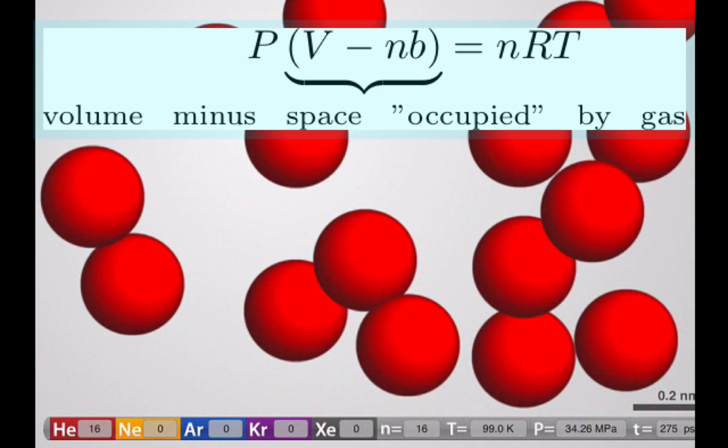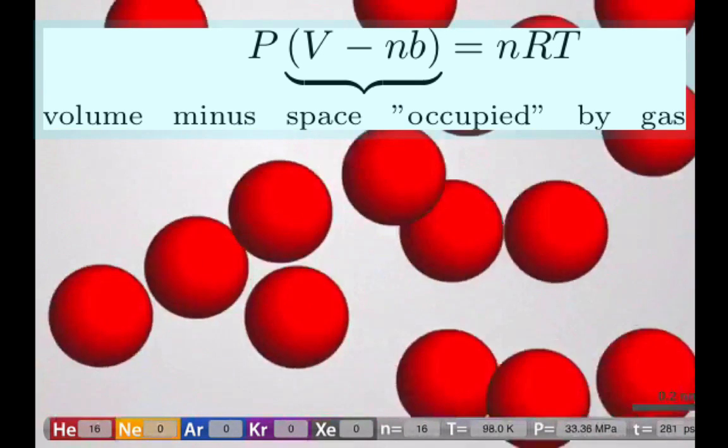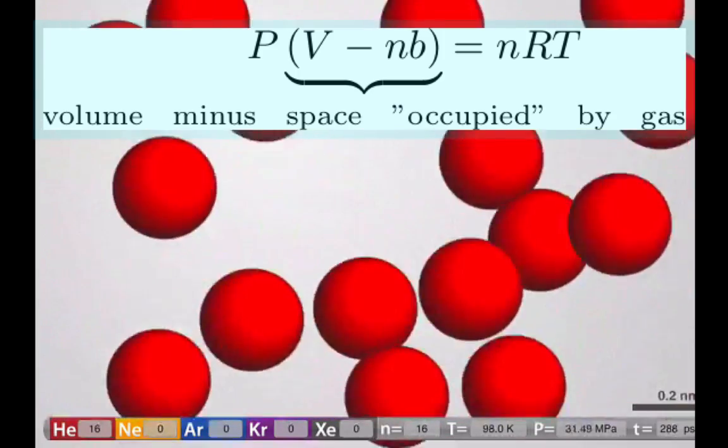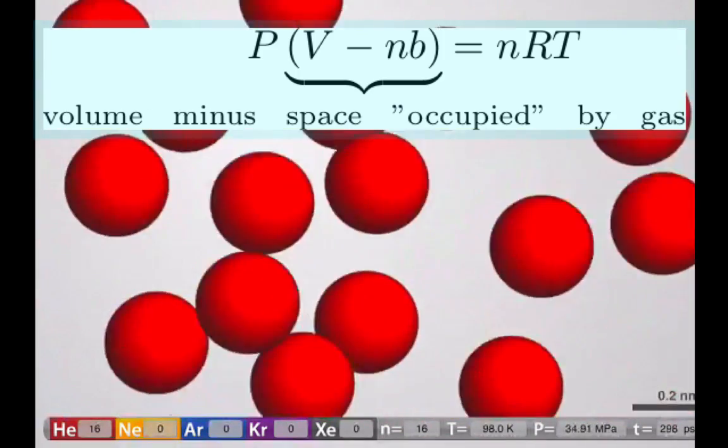That depends on the number of moles n and how big the molecules are, which is covered by this constant b. Large molecules would have a large b constant. Small molecules would have a small b constant.